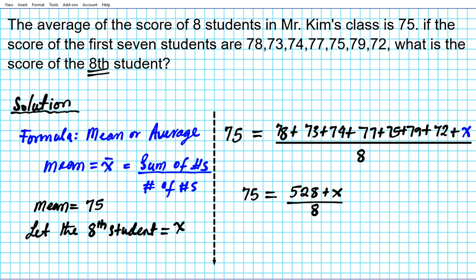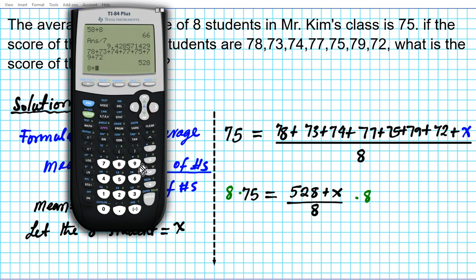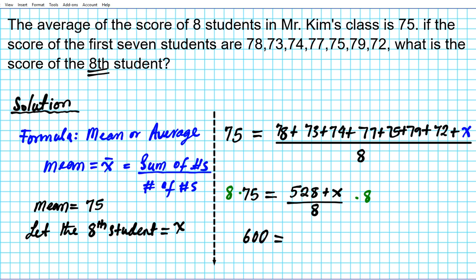Now we solve this algebraic equation using 2 steps. First, we multiply both sides by 8 to get rid of the denominator. On the left side, 8 times 75 is 600. So we have 600 equals 528 plus X. The 8's cancel out on the right side.